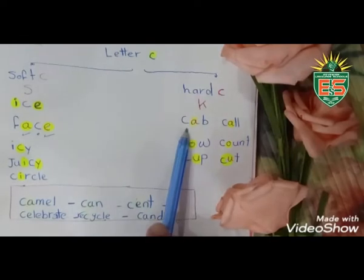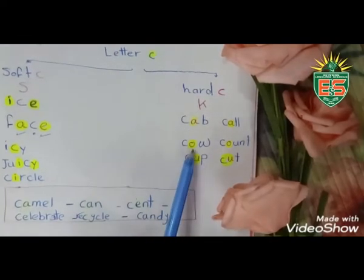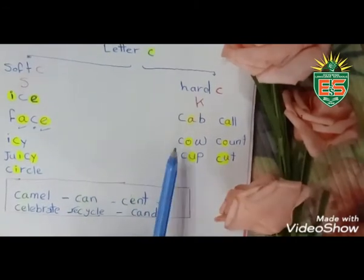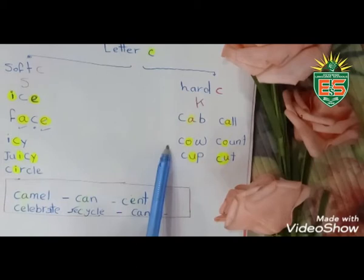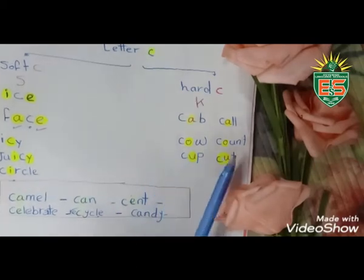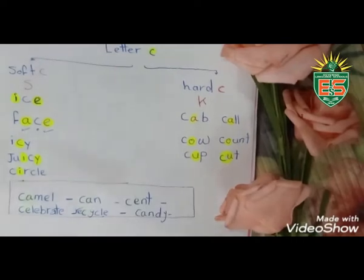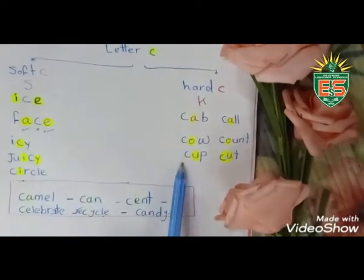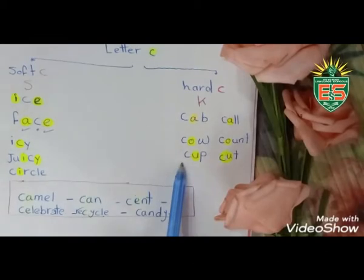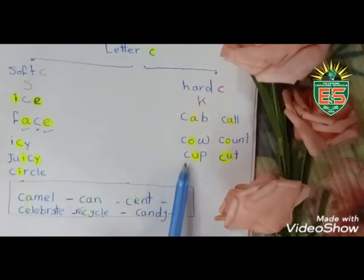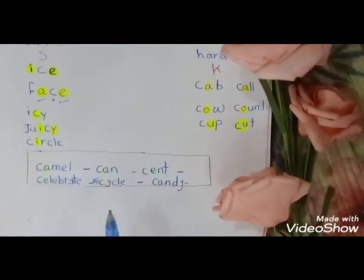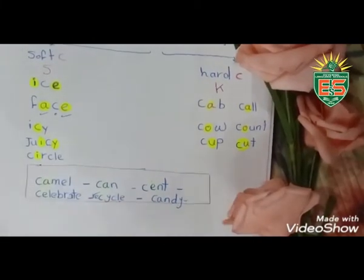Pronounce C as 'k'—cab. Look here for the next case: if I have O after C, I pronounce it 'k', like cab. Here I have some words. Let's read together and put them in soft C or hard C.